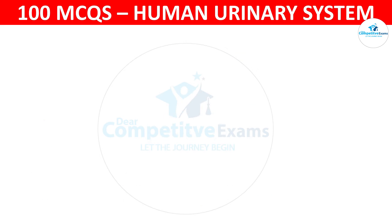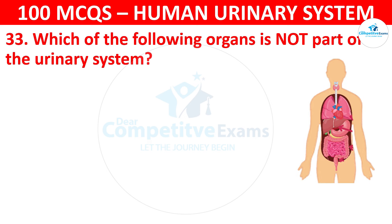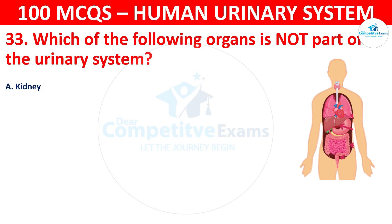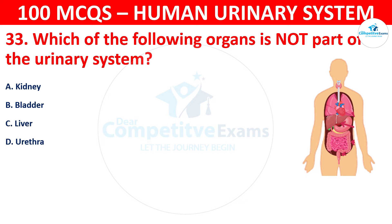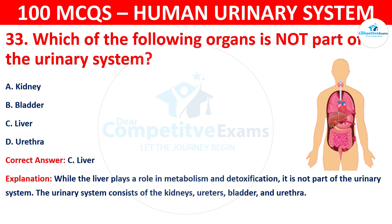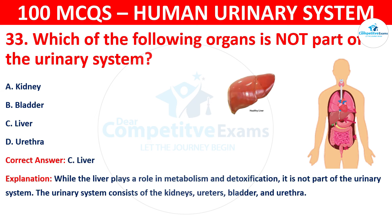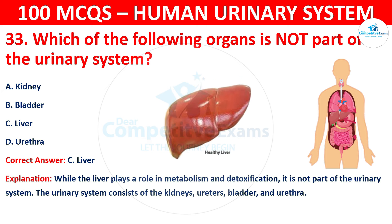Question 33: Which of the following organs is not a part of the urinary system? The options are: kidney, bladder, liver, or urethra. The correct answer is C, that is liver. While the liver plays a role in metabolism and detoxification, it is not a part of the urinary system. The urinary system consists of the kidneys, ureters, bladder, and urethra.